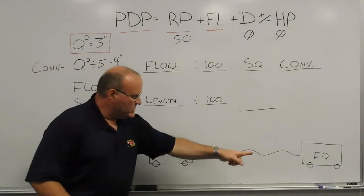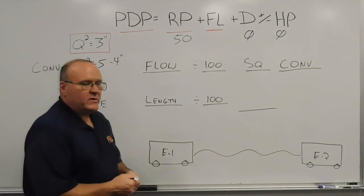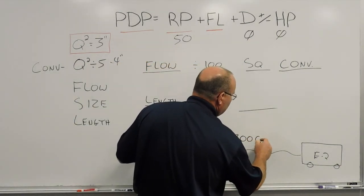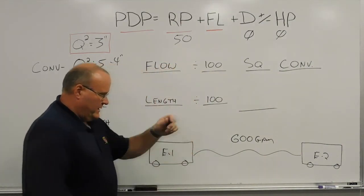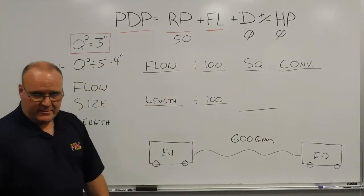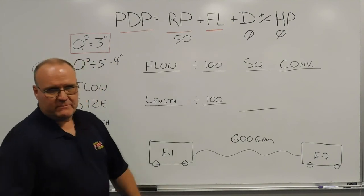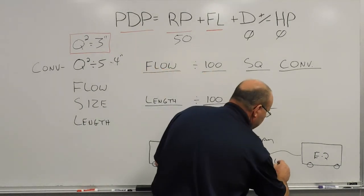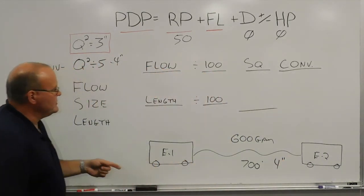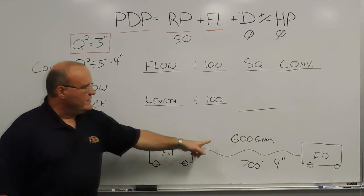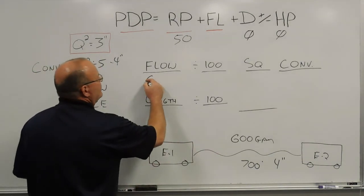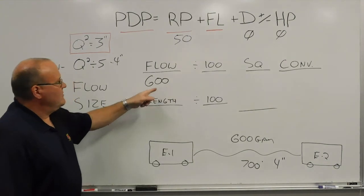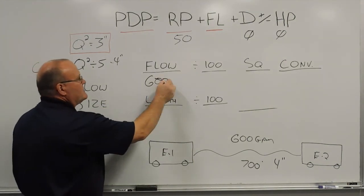We'll do an example here of 4-inch hose from engine 1 to engine 2. We'll use a flow of 600 gallons a minute and 700 feet of 4-inch hose. So the first thing we do is account for our flow — we have 600 gallons a minute. The first step is to divide that by 100, which is essentially knocking off the zeros, so that gives me a 6.